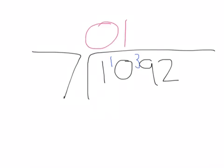After you've done that, you do 7 divided by 39, which is 5 remainder 4. So, you put the 4 next to the 2 just like that.